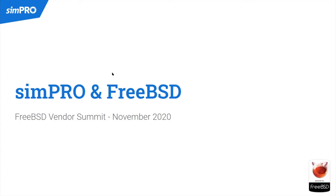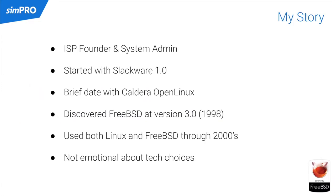I'll give you a little bit of history about me and our business. I originally started my career in IT as a founder of an ISP here in Australia and was a sysadmin at a number of ISPs. I started mainly in the Slackware 1.0 Linux world — received that OS on floppy disk from the US, I believe it was 1995. I discovered FreeBSD in 1998 starting with version 3.0, and that was when I made that first switch.